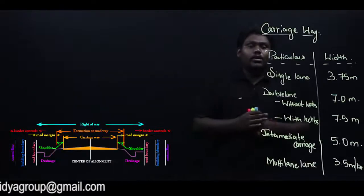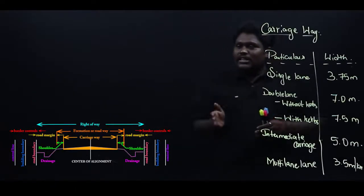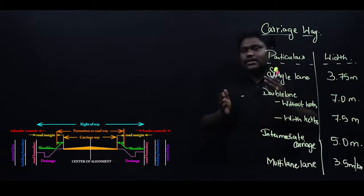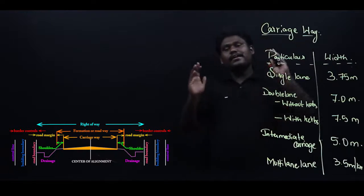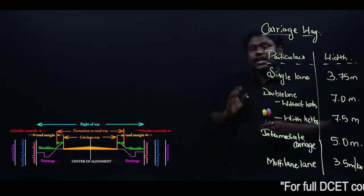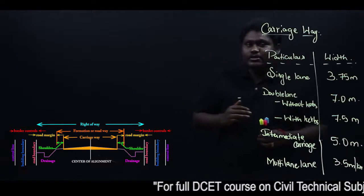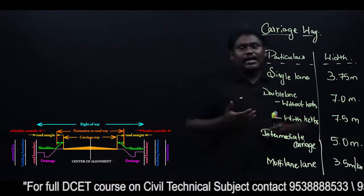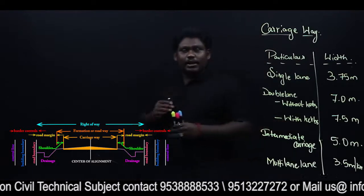Now moving ahead, if you see the next element, on either sides of the road - towards both the left and the right - you have a small portion called shoulders. What are these shoulders? These are also called emergency legs.